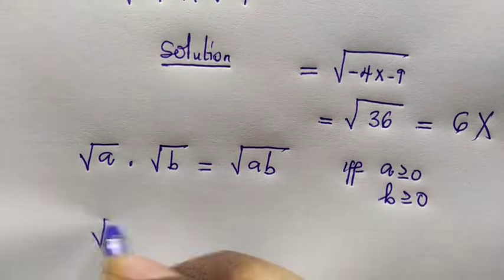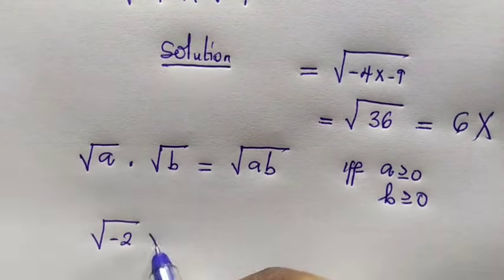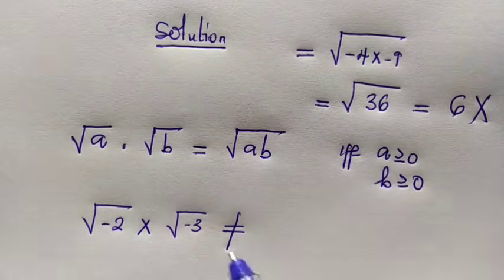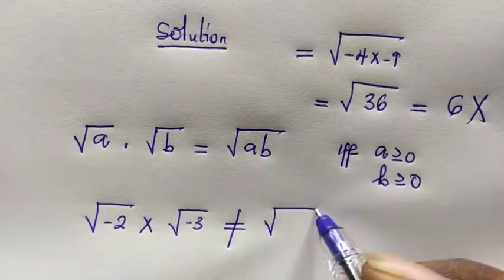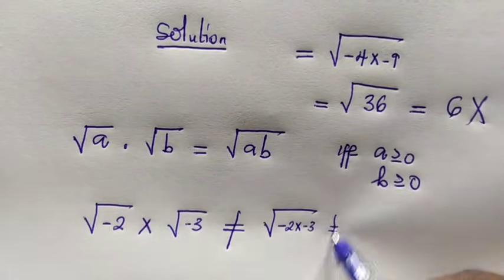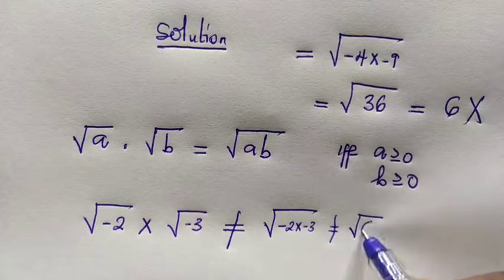Okay, so with this idea, even when you have root of negative 2 times root of negative 3, this is not equal to root of negative 2 times negative 3, which is not equal to root of positive 6.